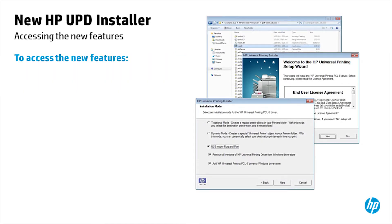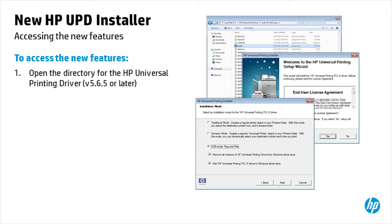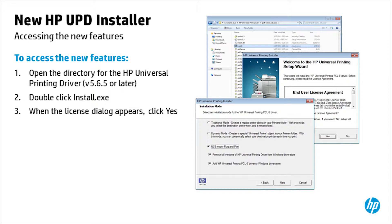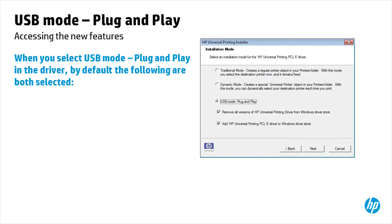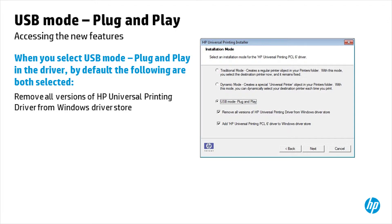To access the new features, open the directory for the HP Universal Printing Driver version 5.6.5 or later and double-click the Install Executable. When the License dialog appears, click Yes. Select USB Mode Plug and Play. When you select USB Mode Plug and Play, by default the following are both selected: Remove all versions of HP Universal Printing Driver from Windows Driver Store.